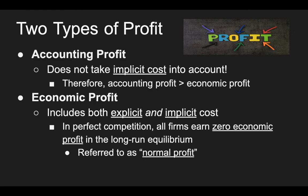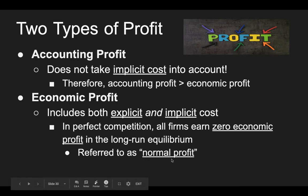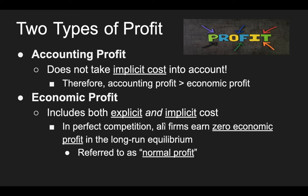Money that you might be sacrificing, opportunities you might be sacrificing, time and effort and energy that you have to put in, risk — things like that. So accounting profit is always greater than economic profit because there's a cost they're leaving out. With economic profit, on the other hand, we include both explicit and implicit costs — all the money in front of us and the money wrapped up in opportunity cost. In perfect competition, because we include all of these implicit costs, in the long run all firms earn zero economic profit. This is referred to as normal profit.